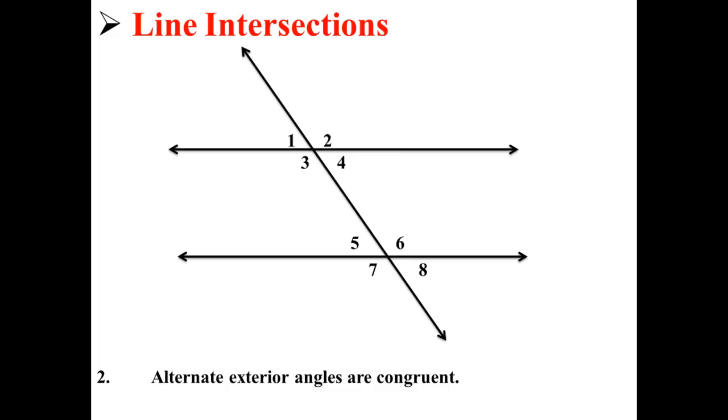The second rule is that alternate exterior angles are congruent. That is, they are the same. So here, angles 1 and 8 are the same, and angles 2 and 7 are the same.